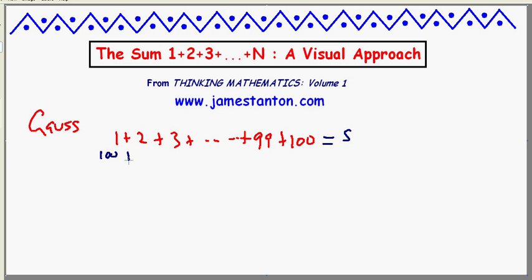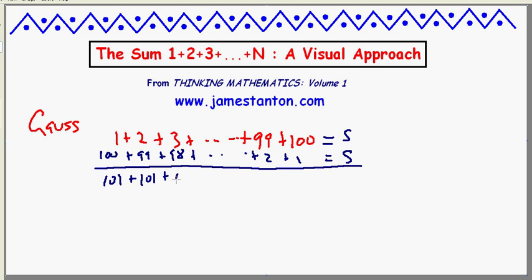And if you write the same sum backwards underneath, obviously it's going to be S again, 100 plus 99 plus 98, it would also be S. But if you sum these two together column-wise, you see 1 plus 100 is 101. 2 plus 99 is another 101. 3 plus 98 is another 101. In fact, every column is going to be 101. And of course, that has to equal S plus S, twice the sum we want.